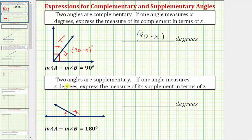So if one angle measures z degrees — let's say this angle measures z degrees — we're asked to express the measure of its supplement, which would be this angle, in terms of z. And because the sum of the measures equals 180 degrees, the measure of the second angle must be 180 minus z degrees.